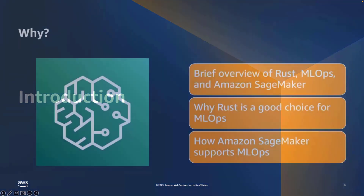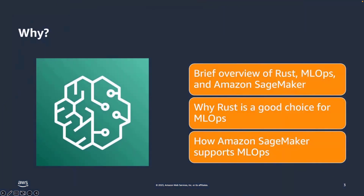Why do we care about Rust? In a nutshell, Rust, ML Ops, and Amazon SageMaker are a great combination. Rust is a great choice for ML Ops due to its strength in binary deployment, and SageMaker has great support for ML Ops.